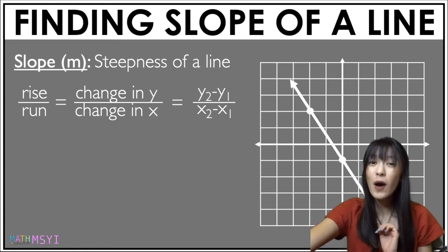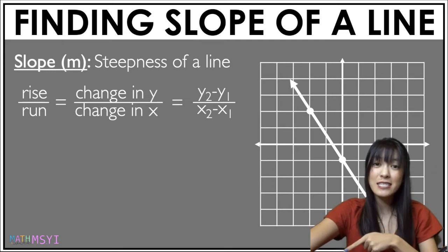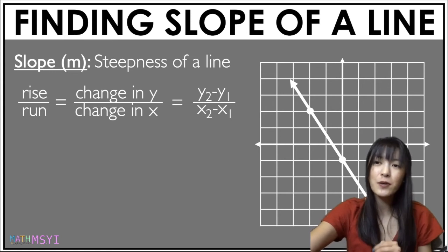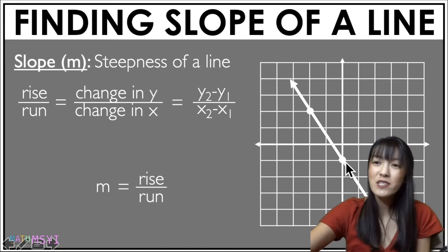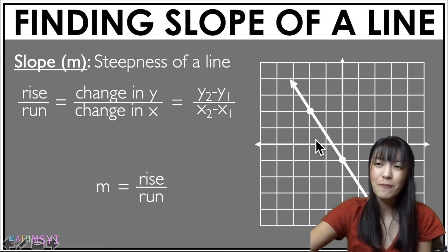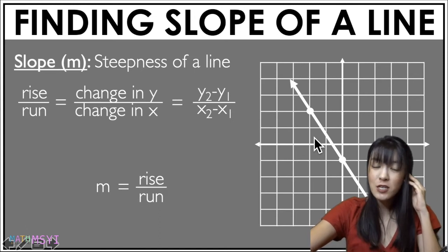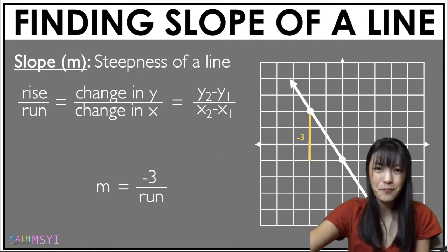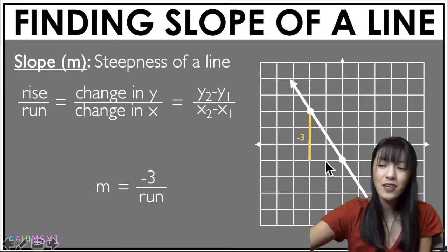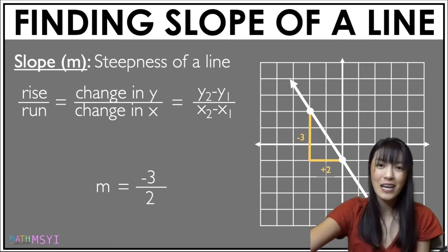Let's try another one. This time we have a downward line and it's going to be a negative slope because you can see that it's decreasing. So once again I'm going to choose two points, starting with the point on the leftmost side. Slope is rise over run, so I'm going to calculate the rise — the change in my y value. I can see the change in y is going downward, so my rise is negative three. Run is my change in x value, and my run here is two, so my slope is negative three halves.